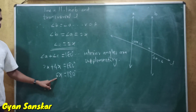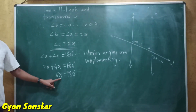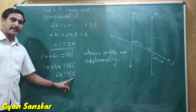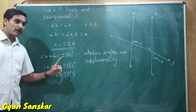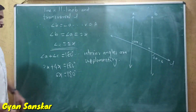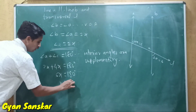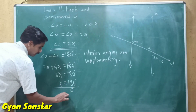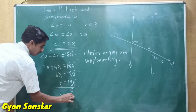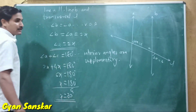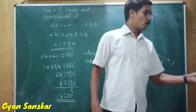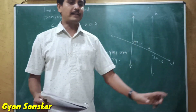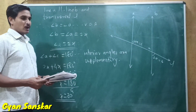Both 6 and x have the relation of multiplication, so when we change the side of 6, it will divide 180. So x is equal to 180 divided by 6, which gives x is equal to 30. Therefore, option number D is the correct answer: x is equal to 30 degrees.